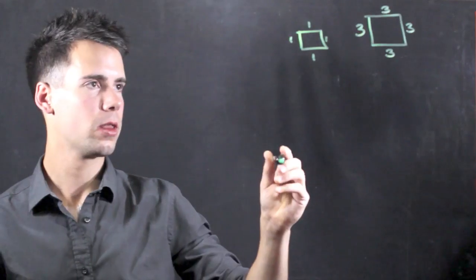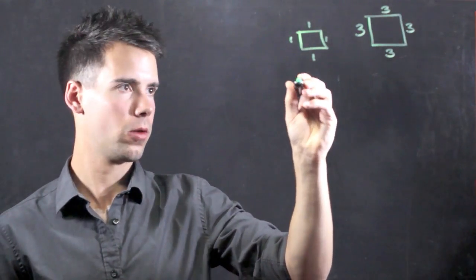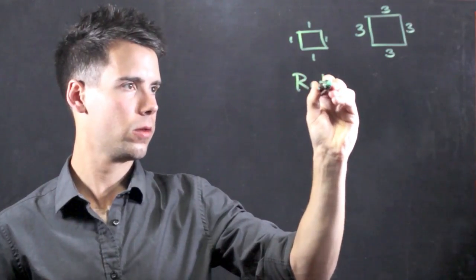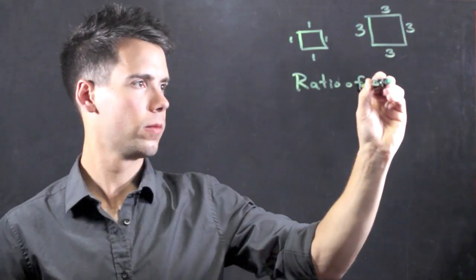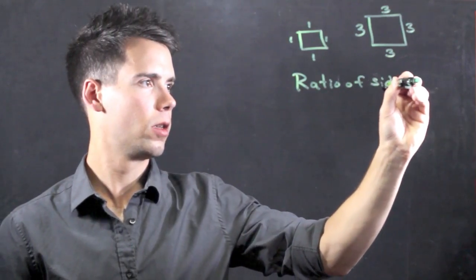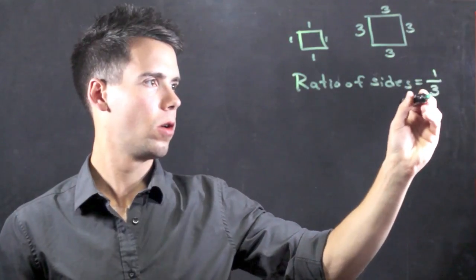Now if we look at the ratio of sides, it's 1 to 3. So ratio of sides equals 1 over 3.